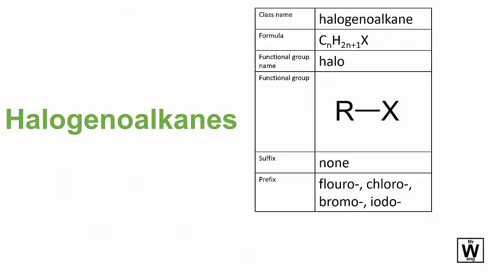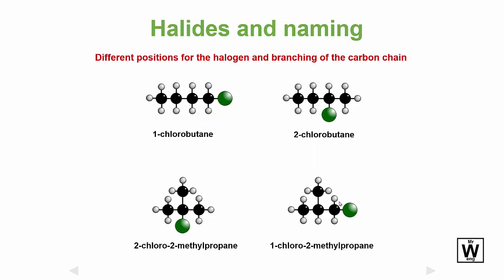Halides, or haloalkanes. That formula is a little bit more complicated — it'd be a bit nasty if that one showed up on the test, but just be aware that's what it is. And so if there's a fluorine, chlorine, bromine, or iodine, they're the suffixes: bromo, fluoro, chloro, iodo. And then you can see here the naming.